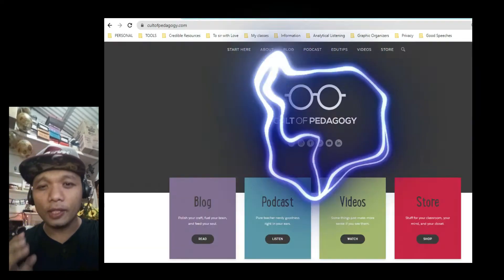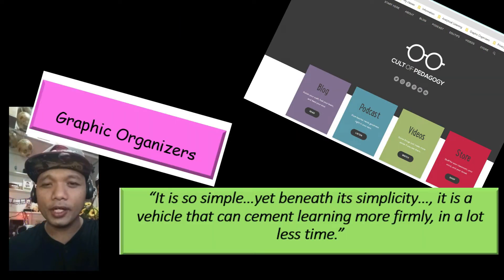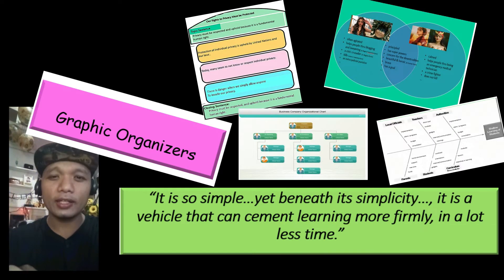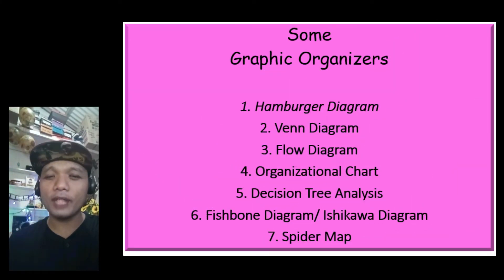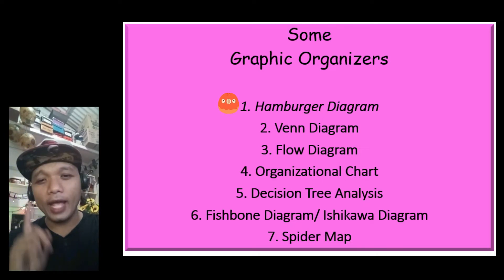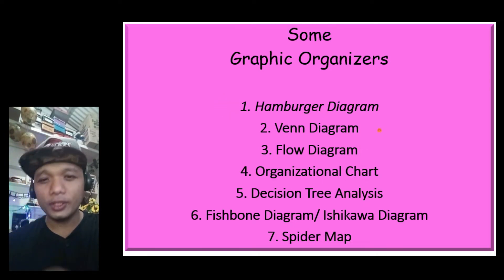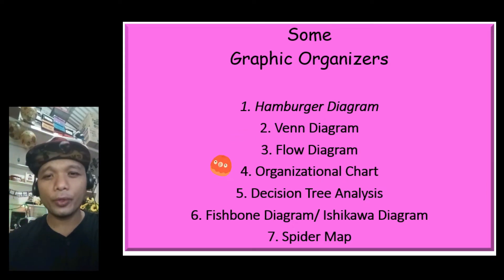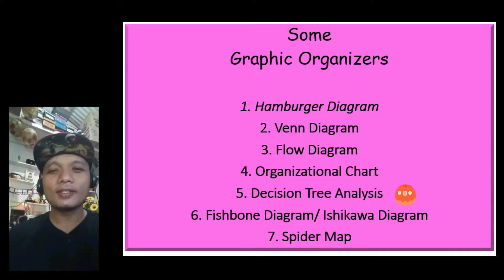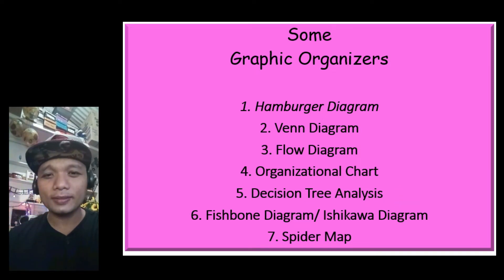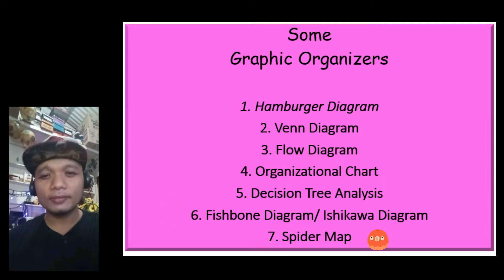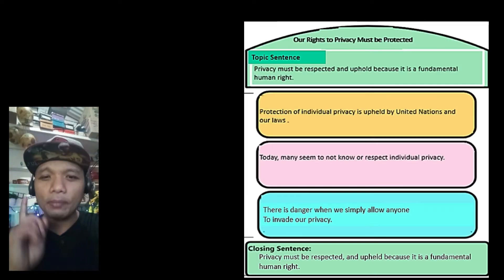According to the Cult of Pedagogy, graphic organizers are so simple, yet in their simplicity, they are an effective vehicle to cement learning. The 7 graphic organizers I would like to share are: Number 1, Hamburger Diagram; Number 2, the Venn Diagram; Number 3, the Flow Diagram; Number 4, Organizational Chart; Number 5, Decision Tree Analysis; Number 6, the Fishbone or Ishikawa Diagram; and Number 7, the Spider Map.